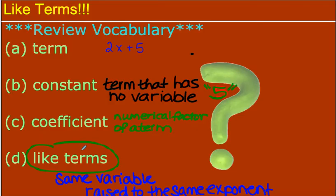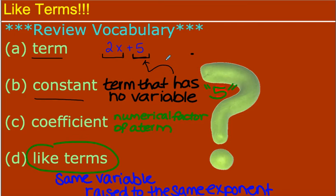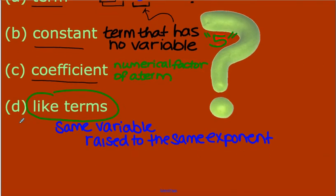Let's review some terms so we can use the distributive property with another concept. The word term means any expression with variables or numbers — so 2X is a term and 5 is a term, making this a two-term expression. The constant is the term that has no variables; in this case, the 5 — it is unchanging. The coefficient is the number in front of the variable, the numerical factor of a term. And then like terms: same variable raised to the same exponent.